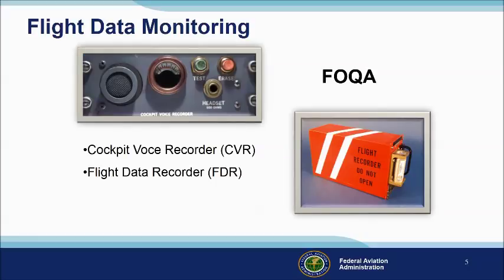In its simplest form, FDM consists of a cockpit voice recorder that records at least the most recent 15 minutes of crew conversations, and a flight data recorder that preserves such things as engine parameters, control position, heading, altitude, and airspeed data. The equipment and processes to acquire and distribute the data are collectively known as Flight Operational Quality Assurance, or FOQA.